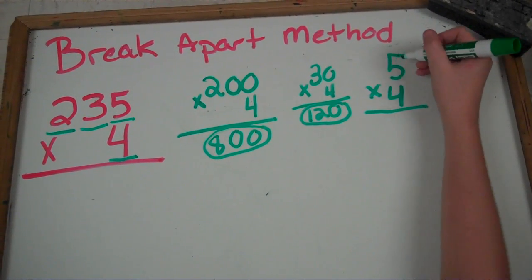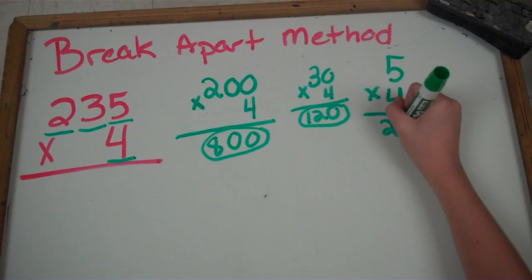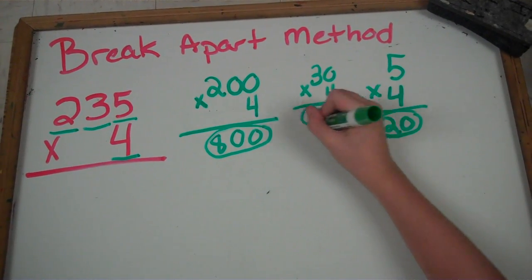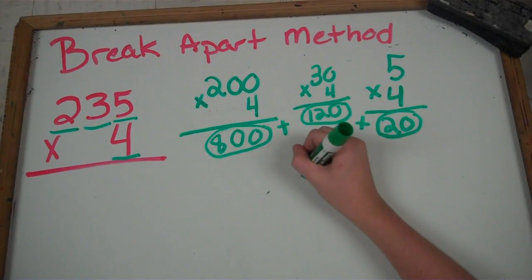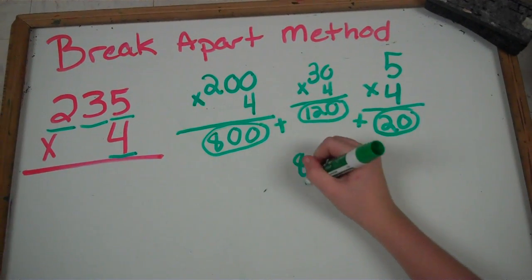And 4 times 5 is 20. Then you would add it all together, which I'm going to write down here.